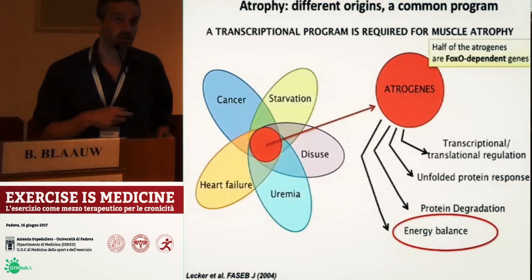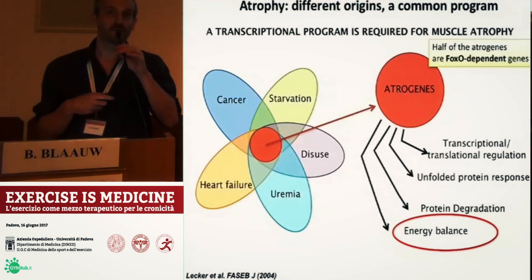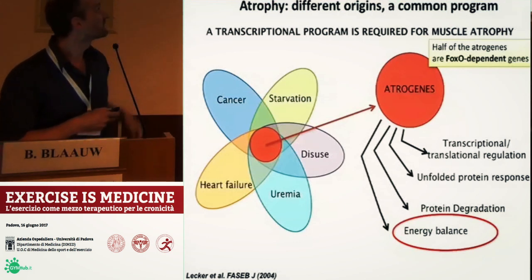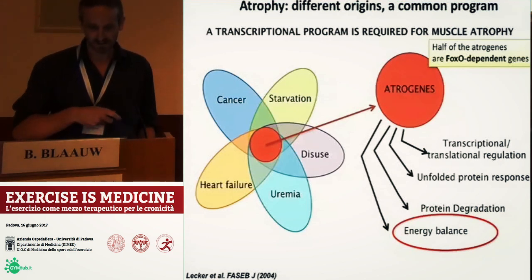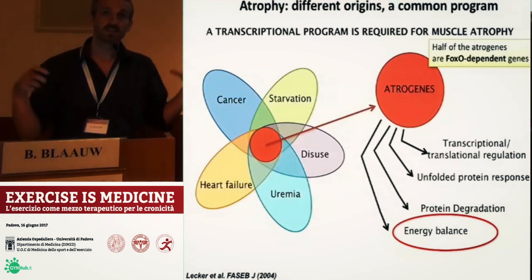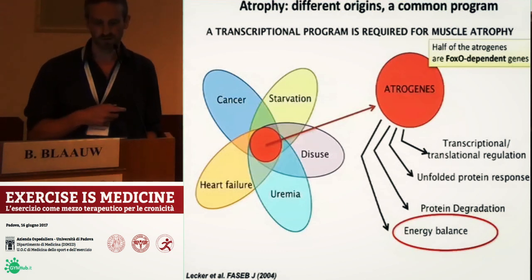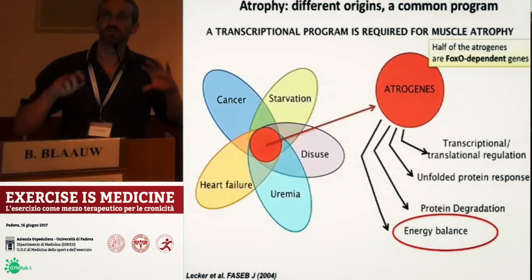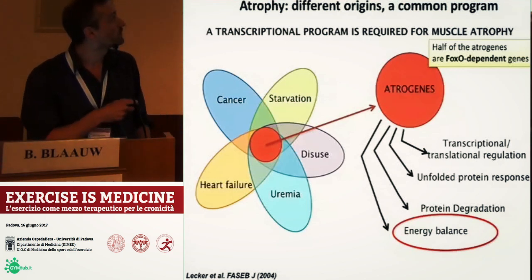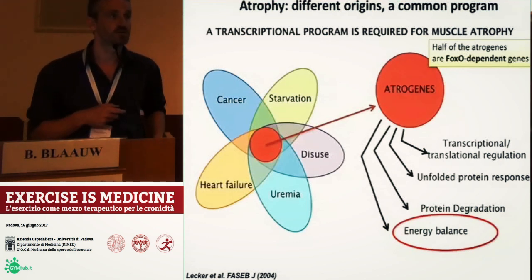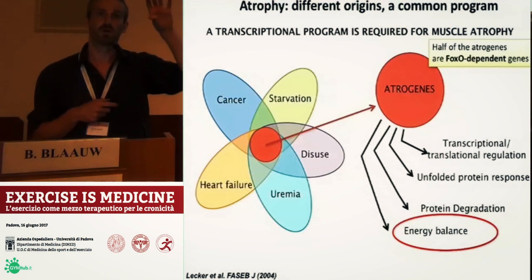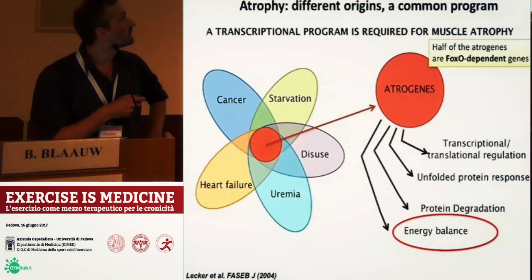What is regulating this skeletal muscle wasting? Going a bit into the mechanisms — about 10 years ago there was a very important study done by a group in Harvard which compared muscles from different pathological conditions and examined which genes were differentially regulated. They examined in cancer, disuse, or heart failure which genes were going up or down, and then looked to see if there were genes going up or down in all conditions. These are the so-called atrogenes — a fingerprint of a muscle going into atrophy.